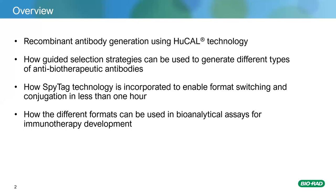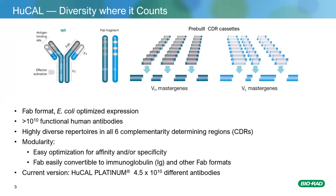Our custom antibody service is built around a phage display human antibody library we call HuCAL, which stands for Human Combinatorial Antibody Library. This is essentially a gene library where the genes encode antibody fragments — specifically FAB fragments — that bind the target. FAB stands for Fragment of Antigen Binding, comprising the variable regions and first conserved regions of the antibody.